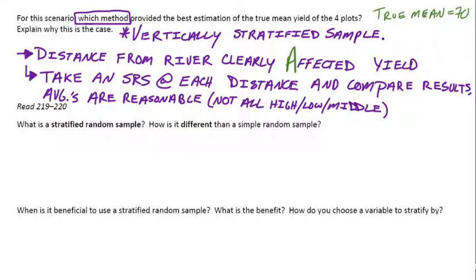We just finished the river activity and came to the realization that for this example the vertically stratified — or stratified by column — would be the best or most representative sample we could come up with, because the yield apparently depended on how close the plot was to the river. Getting a representation from each one of those vertical columns gave us our best overall random sample.